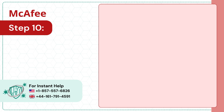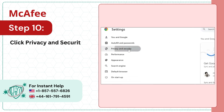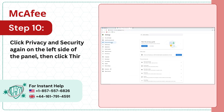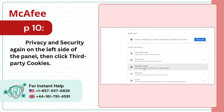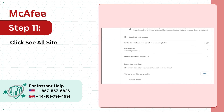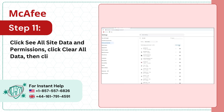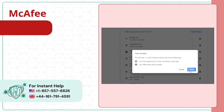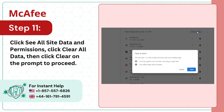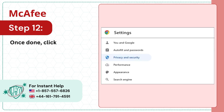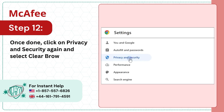Step 10: Click Privacy and Security again on the left side of the panel, then click Third Party Cookies. Step 11: Click 'See All Site Data and Permissions', click 'Clear All Data', then click Clear on the prompt to proceed. Step 12: Once done, click on Privacy and Security again and select Clear Browsing Data.